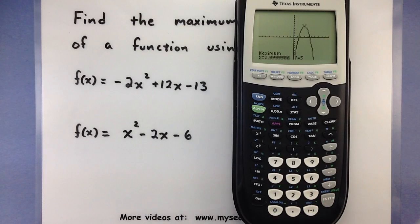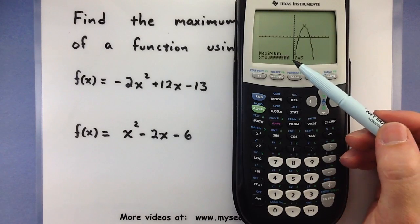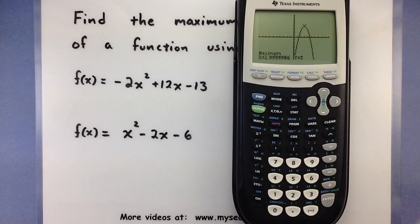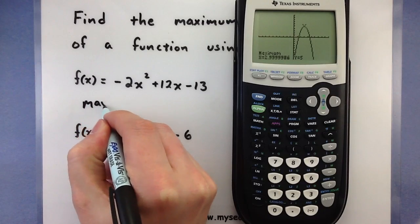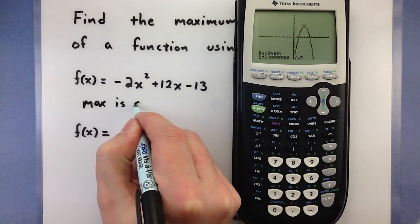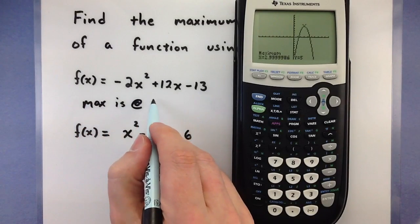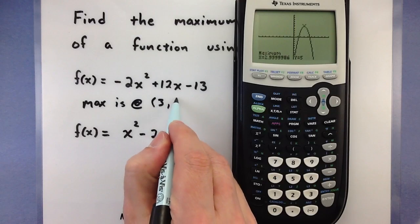Now the calculator will think for a bit and actually return what the maximum value is. And it gives you an x and a y pair, so it's saying that the x is at 2.9999986 and the y is 5, we'll go ahead and round that and say the max is at (3, 5).